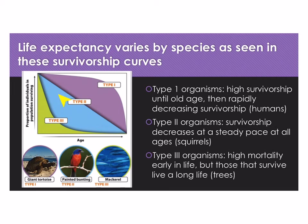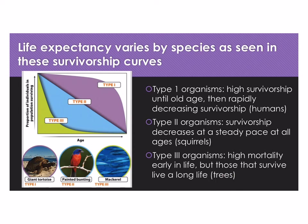Then there's Type 2 organisms, shown in blue — they basically have a steady rate of death all throughout their life. An example is birds; some survive to old age, some die young, it's just a steady rate. Finally, there's Type 3 organisms, which have a high mortality early in life, and then those that survive live a really long time. An example is a tree — many seeds or small seedlings don't make it, but those that do survive live a very long time.